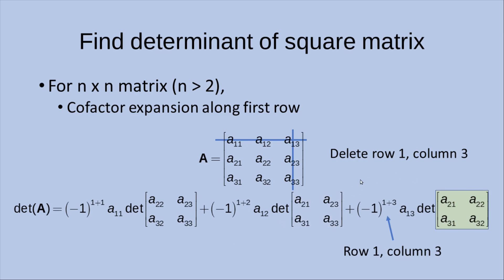The final term of the co-factor expansion is shown here. I do the expansion by taking A sub 1,3, and then I do the power of minus 1 to be 1+3, because I want to delete the first row and the third column. The determinant to be found here is evaluated from the matrix after deleting the first row and the third column. That's why we have these four elements coming to the co-factor expansion term.